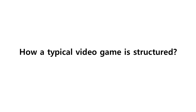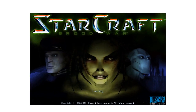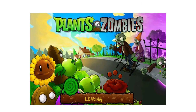How are video games structured? Video games usually include a starting screen which plays after starting up the game before reaching the main menu. Startup screens can consist of production logos, game title, and loading progress before reaching the main menu of any game. This is a startup screen for the first video game in the Starcraft series. This is a startup screen for Plants vs Zombies.